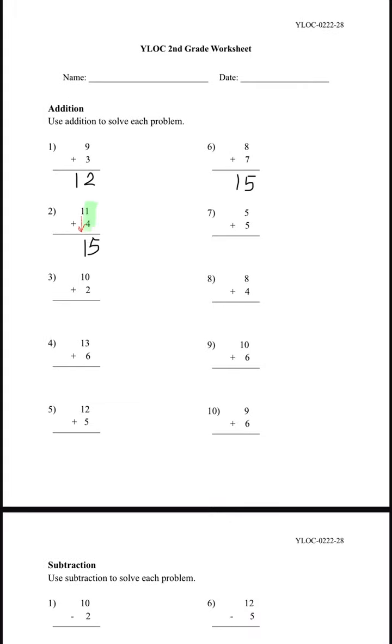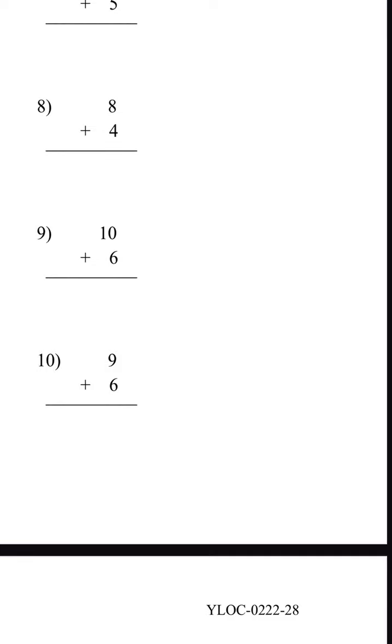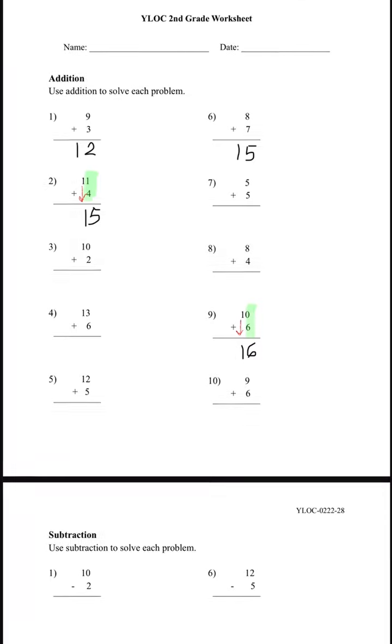Let's try one more. Number 9. We have 10 plus 6. That is 6 because 0 plus any number would be the same number. And the 1 comes down, doesn't have any numbers below. And the answer is 16.